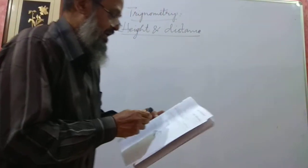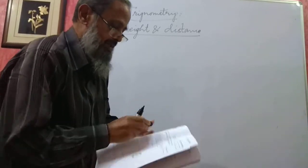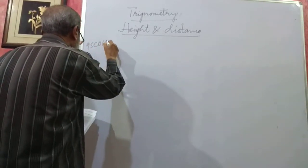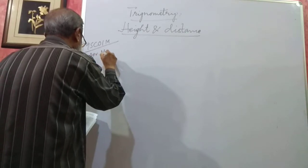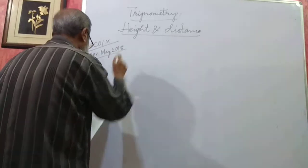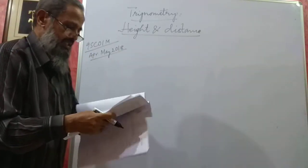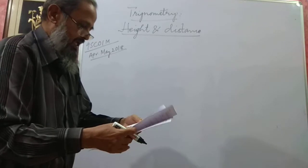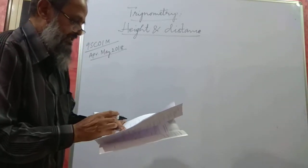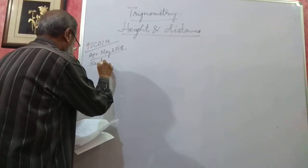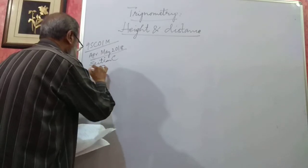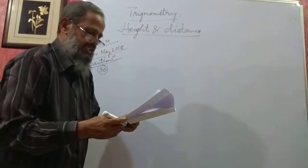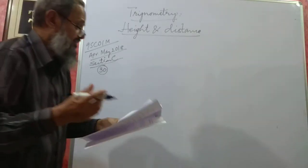I am taking a problem from the 1st Semester diploma paper, code 9SC01M, of April–May 2018. Problem number 30 in Section C. The problem is: the angle of elevation of the top of a tower at a distance of 75 meters is 60 degrees. Find the height of the tower, for 5 marks.